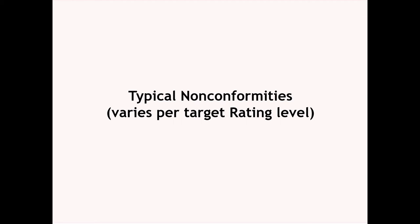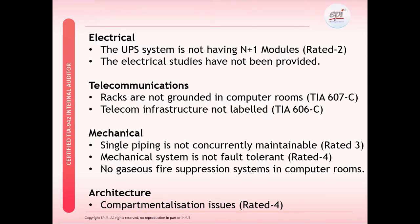As part of the training, we will have a session around the various typical nonconformities which typically occur depending on the target rating level. For example, within the electrical systems, typical findings or nonconformities could be in the UPS systems — for Rated 2, we need to have redundant components or N+1 modules. We typically find that the electrical studies have not been provided. The auditee may have them but just may not be able to find them.